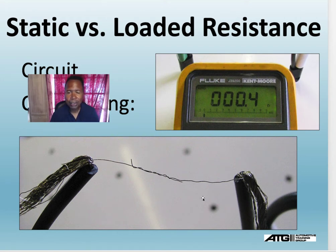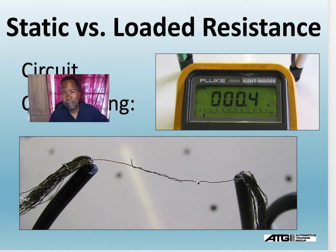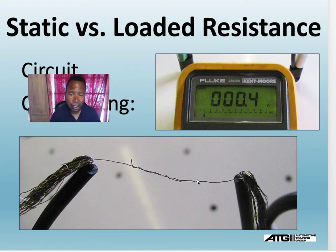If I use an ohmmeter, like you see here, to check this connection on this wire, it would read good. It will tell you nothing is wrong with this wire. But a voltage drop across this wire will tell you the wire was bad, because when current is supposed to flow through all of it and is only flowing through part of it, you're going to have a high voltage drop.